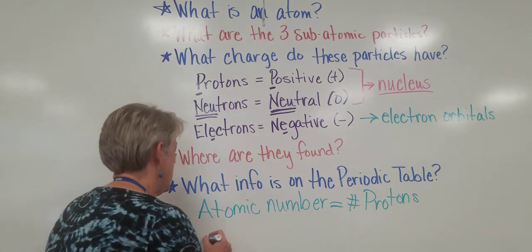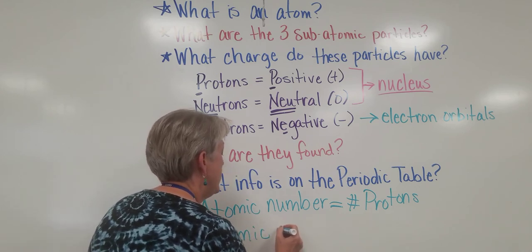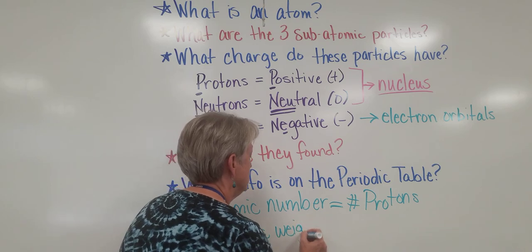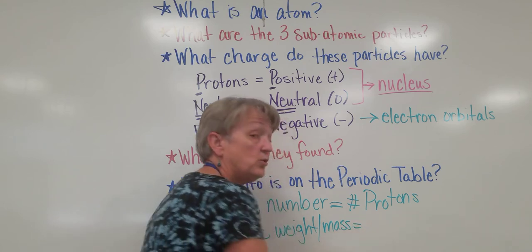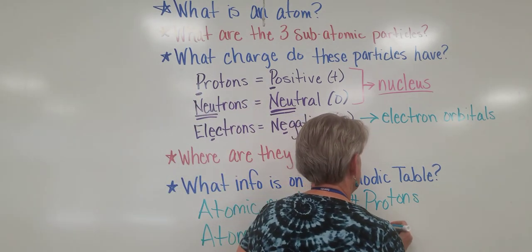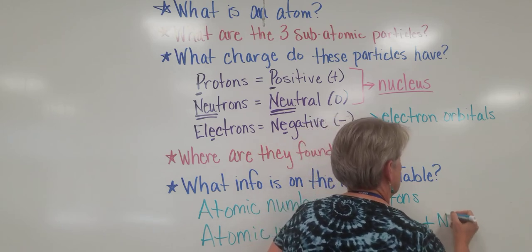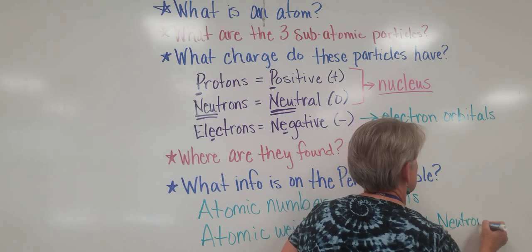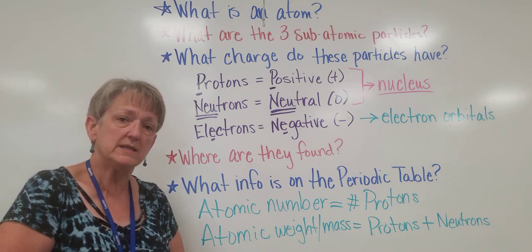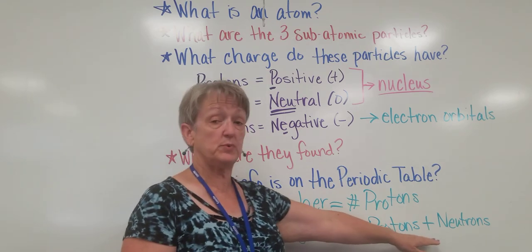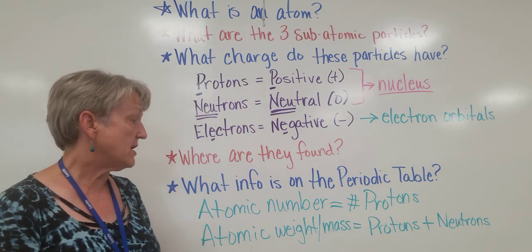We also learned that the atomic weight or mass is equal to the protons plus the neutrons. So the atomic mass is the mass or weight of the nucleus. So the protons plus the neutrons gives us the atomic mass or the atomic weight.